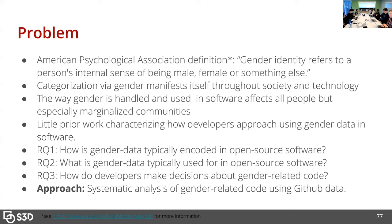Gender is used across society, but of course also in software. The way gender is used by code and how it's handled can affect all people, but especially marginalized communities like transgender people or non-binary people. There's little prior work exploring gender in software, so I wanted to look at this using GitHub data.